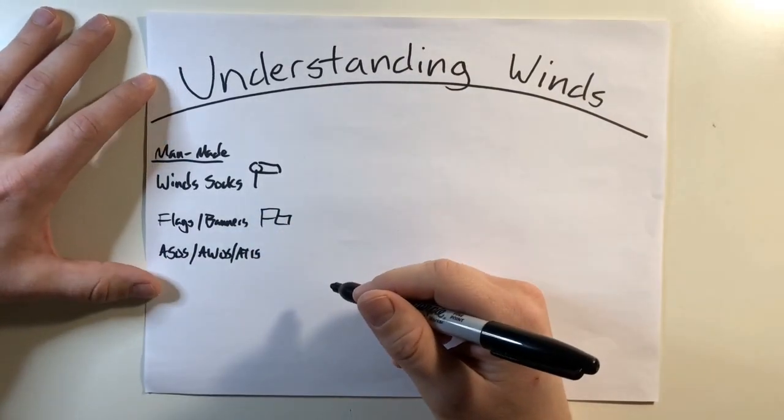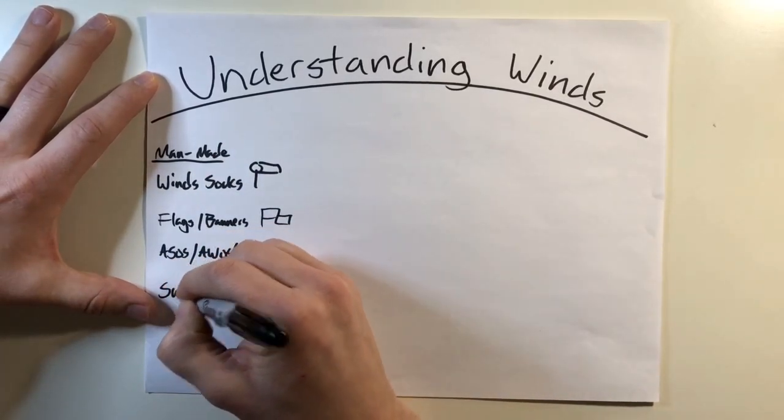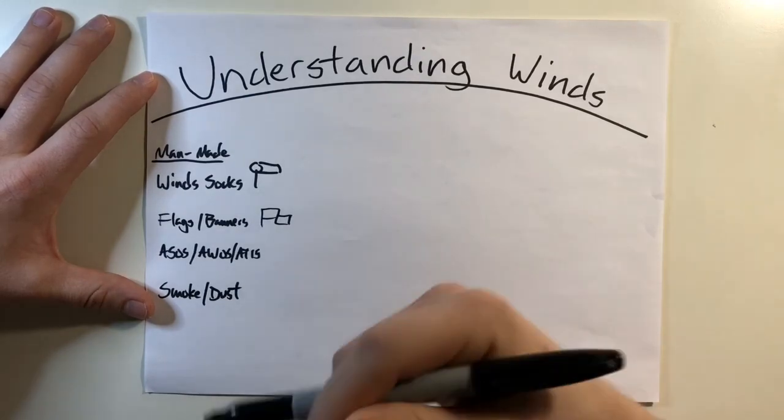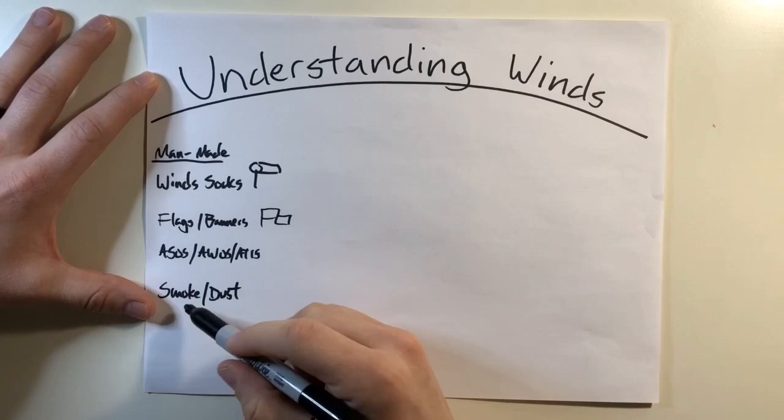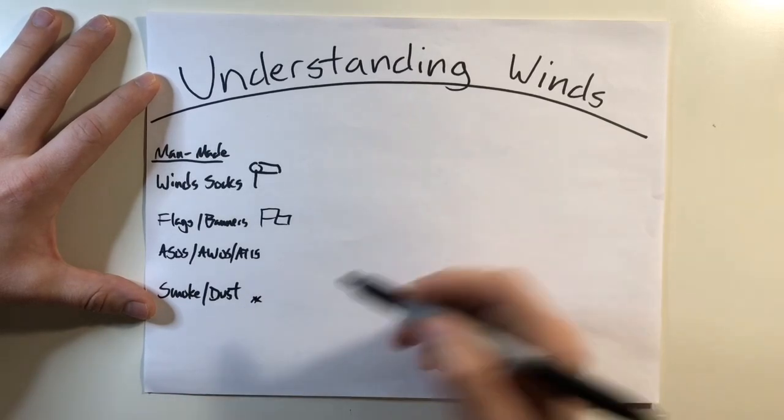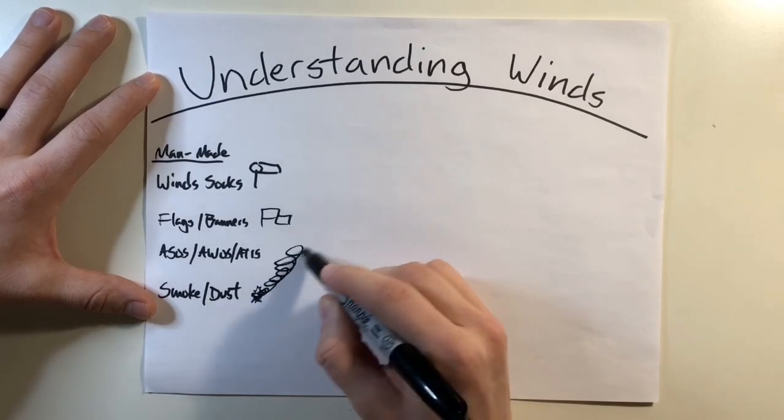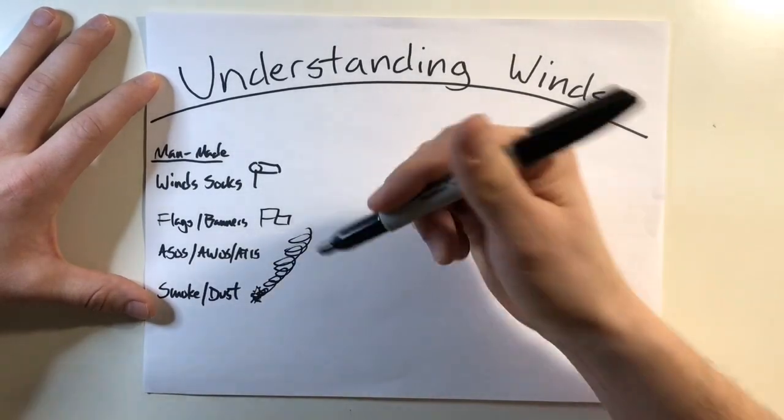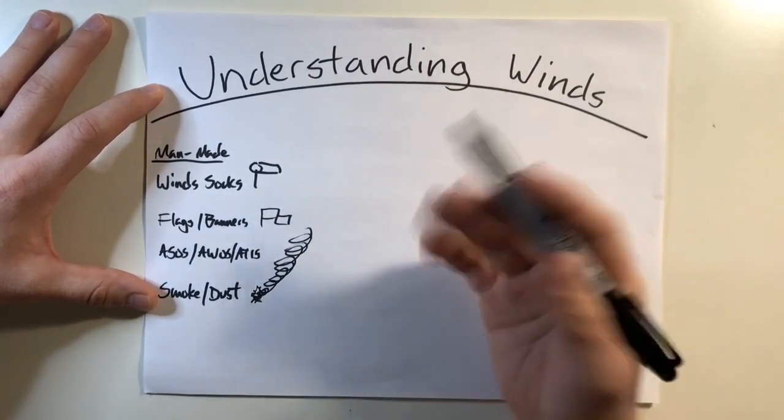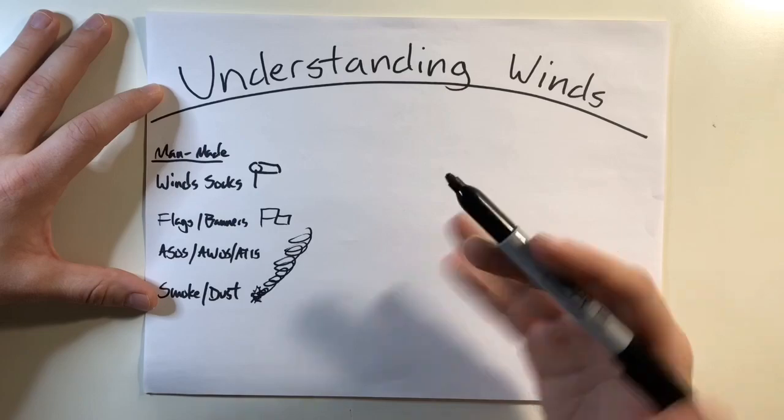The last man-made wind determining tool that I'm going to cover here, kind of borderline man-made versus nature-made, is smoke and dust clouds. As you're flying along, maybe somebody's got a campfire out there or somebody's driving on a dirt road, and it starts to have a plume of either smoke or dust. This is just an easy indication of where the winds are coming from. The smoke generally is going to be rising and showing you some kind of indication of where the winds are carrying that smoke or dust. The more horizontal the plume, the faster the wind. The more vertical, the slower the wind. But as a general rule of thumb, a 45 degree angle for rising smoke generally equates to about 10 to 15 knots of wind.